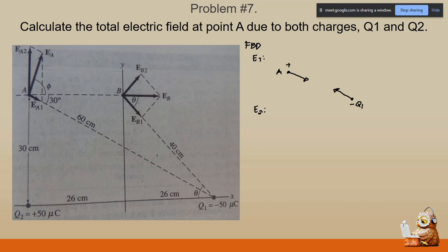For the free body diagram of E sub two: point A is at the top with a positive charge, and q sub two is below — also positive. Since we have two positive charges, they repel each other. Due to this repulsive force, the arrow at A will point upward, and the arrow at q sub two will point downward. That is the free body diagram of E sub two.